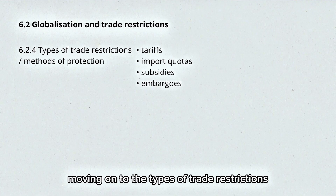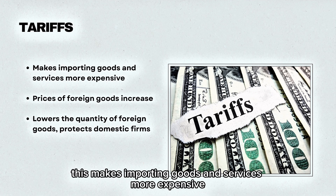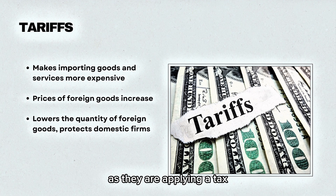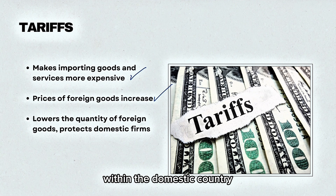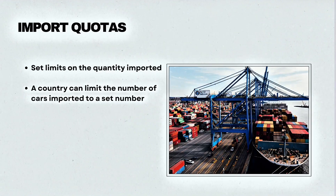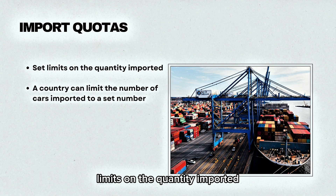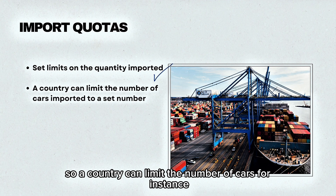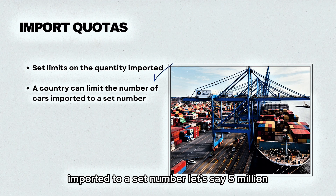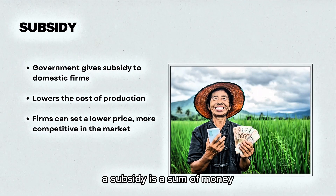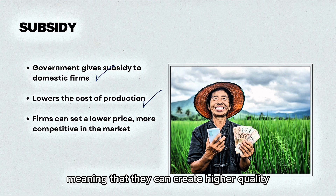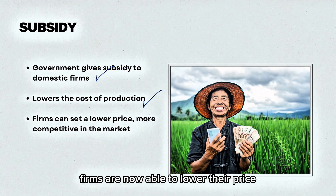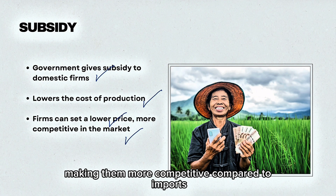Moving on to the types of trade restrictions and methods of protection. Firstly, tariffs make importing goods and services more expensive by applying a tax on any imported good, which increases the cost of production. Prices of foreign goods increase, lowering the quantity of foreign goods in the domestic country and protecting domestic firms. Secondly, import quotas are set limits on the quantity imported — for example, limiting car imports to 5 million. A subsidy is a sum of money given to domestic firms by the government, lowering their cost of production so they can produce higher quality goods in larger quantities and lower their prices, making them more competitive compared to imports.